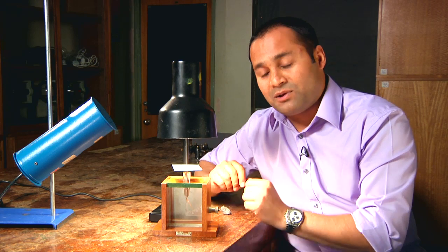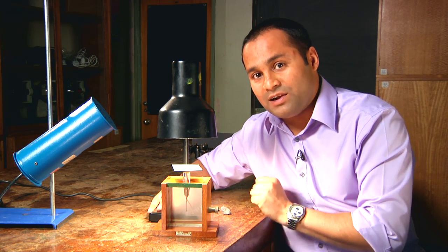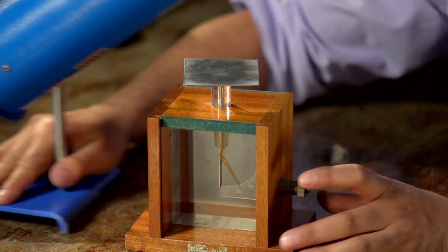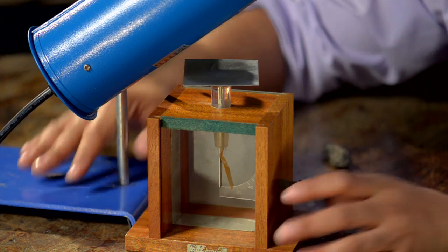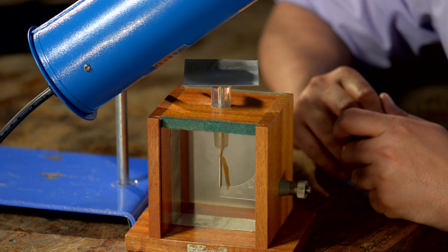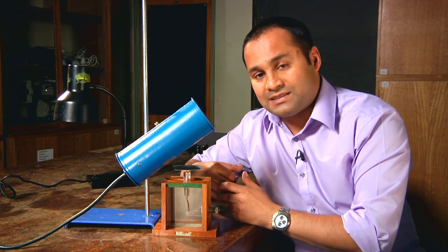Your students need to notice that with visible light, nothing happens. But watch what happens when I shine ultraviolet light. You can see that the gold leaf immediately starts to fall. And that must mean that the UV light is somehow discharging the electroscope.